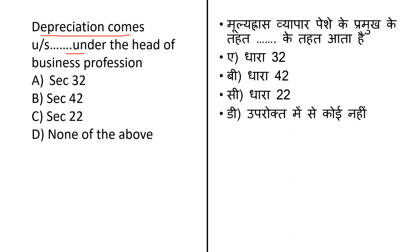The next question: 'Depreciation comes under which section under the head of business or profession?' The options given: first is Section 32. As per Section 32 of Income Tax Act 1961, depreciation is allowed on tangible assets and intangible assets. Tangible assets are those we can touch and see; intangible assets are those we cannot see. It applies when assets are wholly or partly owned by the assessee and used for the purpose of business or profession. Second option is Section 42, which provides special provisions for deduction in the case of business for prospecting for mineral oil under an agreement with the central government.